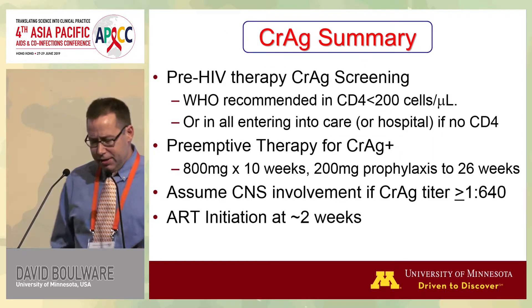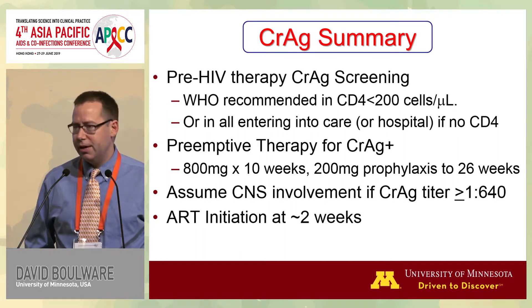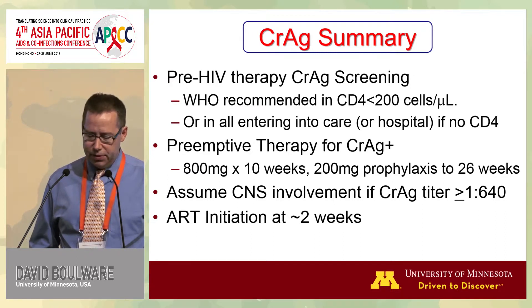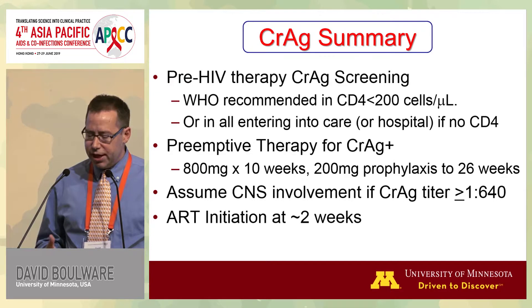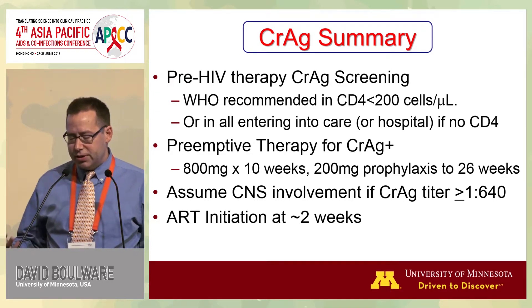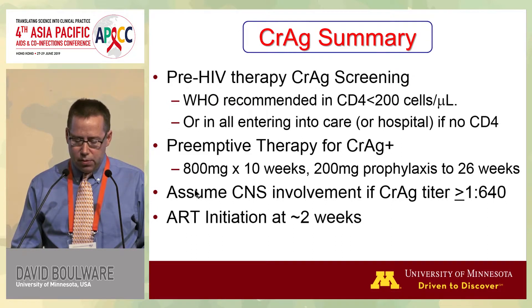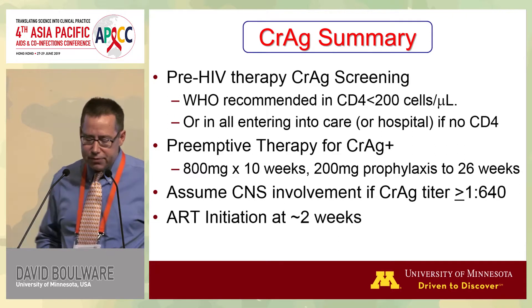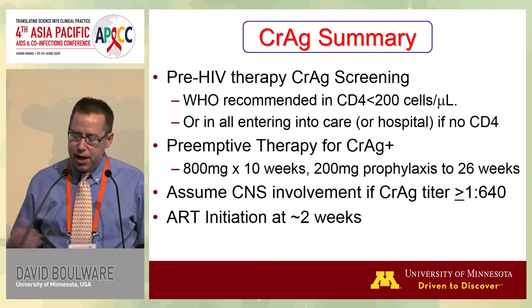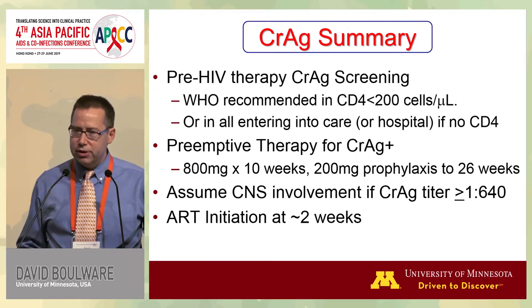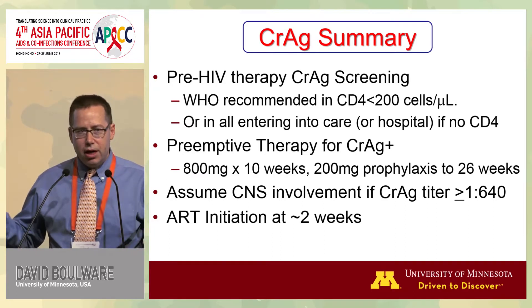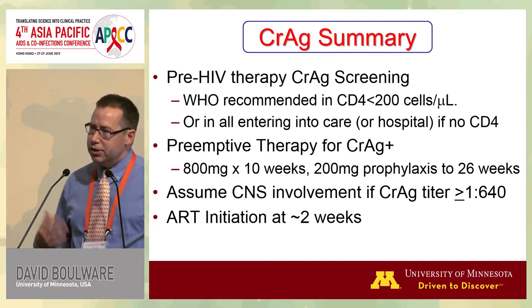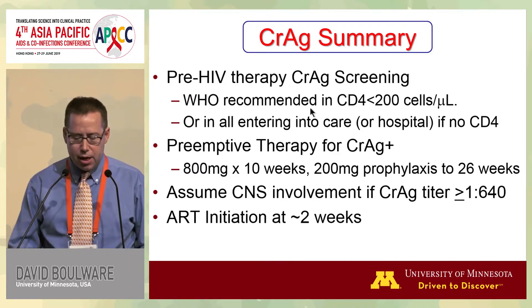In summary for cryptococcus: WHO recommends screening when people enter into care or present sick to hospital. The preemptive therapy recommendation is 800 milligrams for 10 weeks, then 200 milligrams prophylaxis through 26 weeks — though increasing that dose is important given residual mortality. Assume CNS involvement with high titers. Two dilutions — 1:160 and 1:640 — can tell you whether titers are low, middle, or high. ART initiation at two weeks is probably a good recommendation.